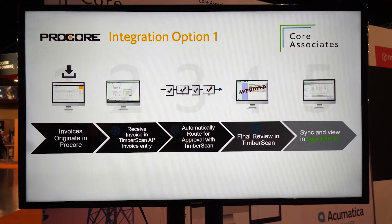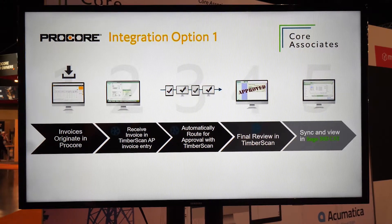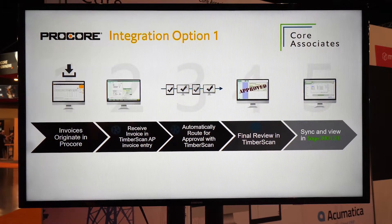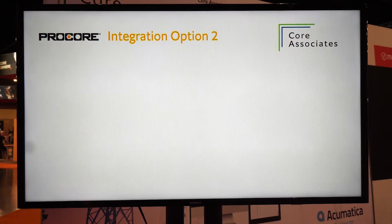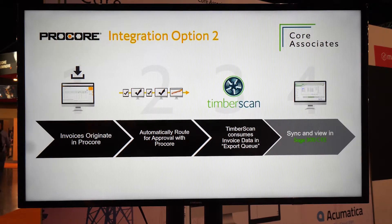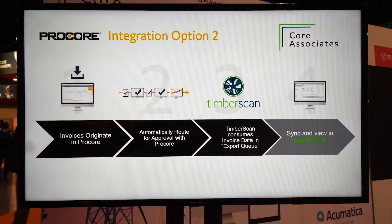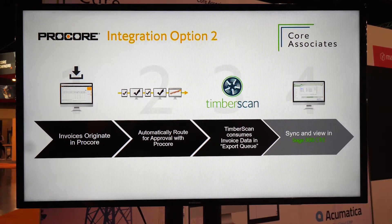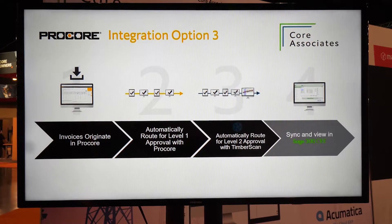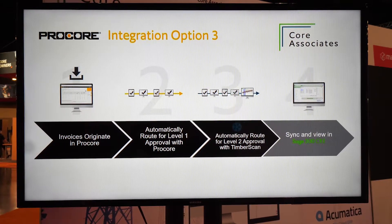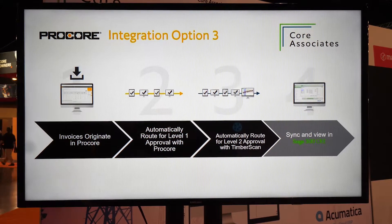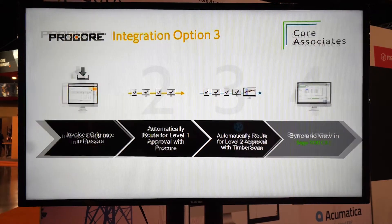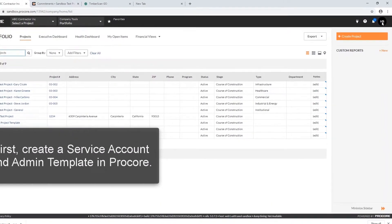Let's take a look at our Procore integration. There are three options available for users. Option one: you can have invoices originate in Procore, then they come into the Timberscan data entry function and you can automatically route them out for approval. Option two: invoices originate in Procore and when they come into Timberscan you can use our routing and approval system, or you could have approvals done right within Procore. Option three: you could have a level one approval in Procore, have it come over to Timberscan and use our system for more advanced routing and approval, then it goes through the normal process and over into Sage.